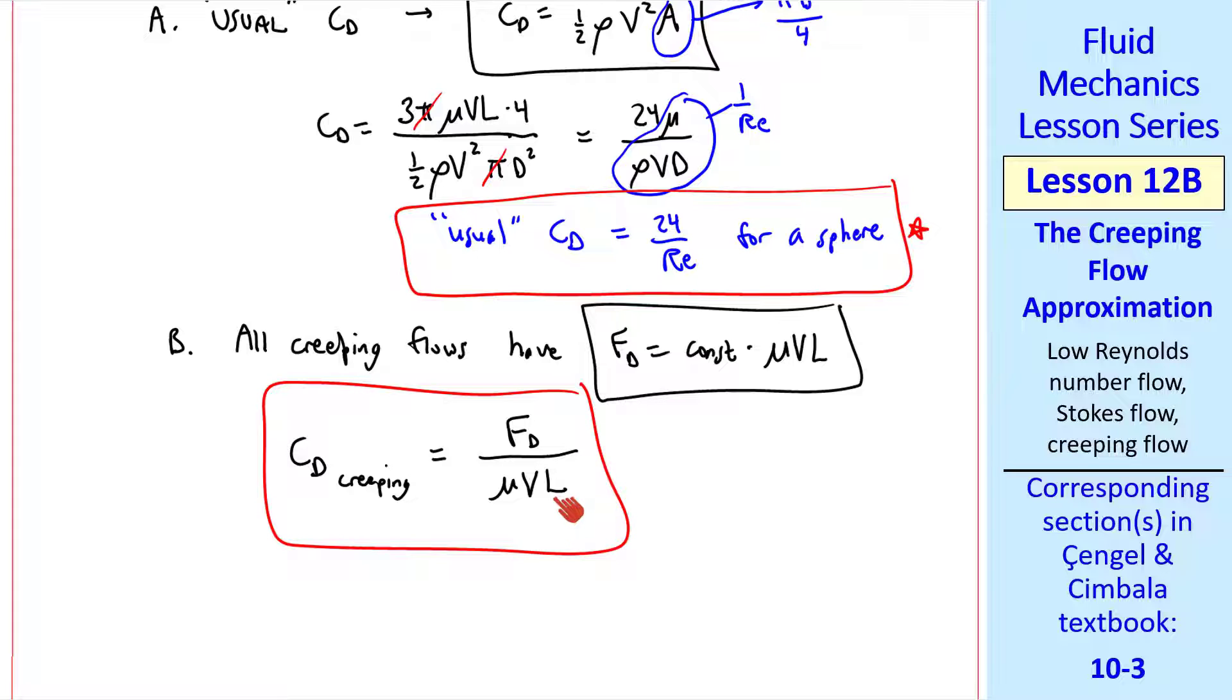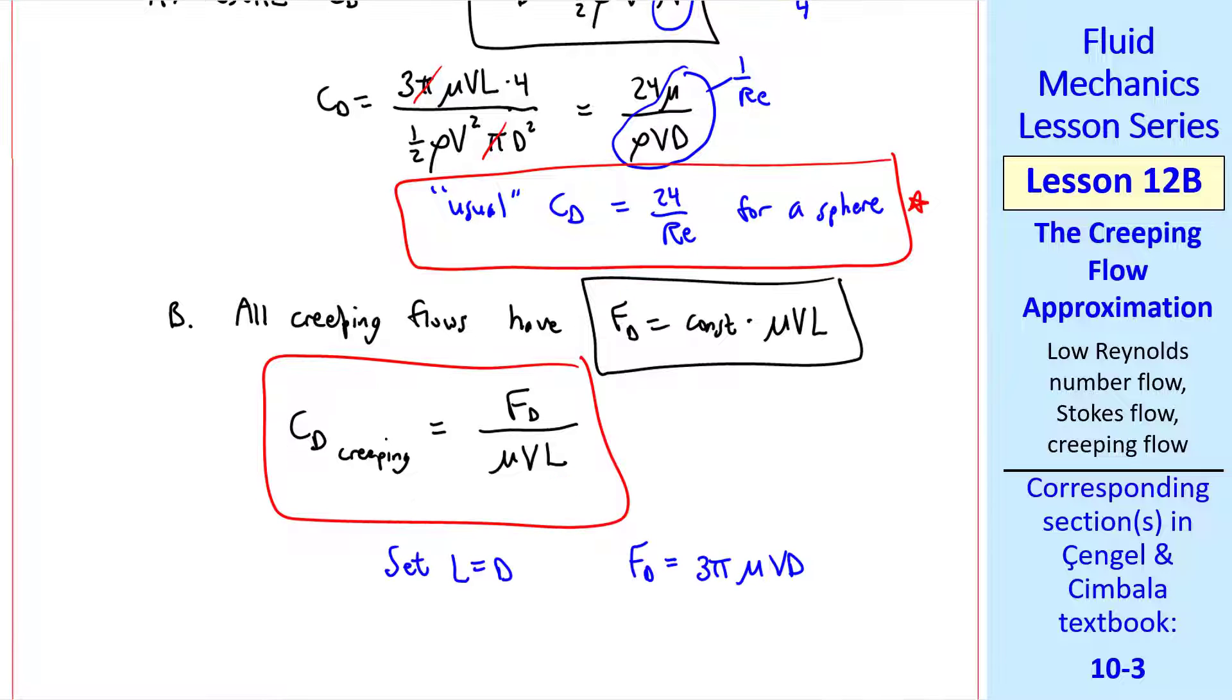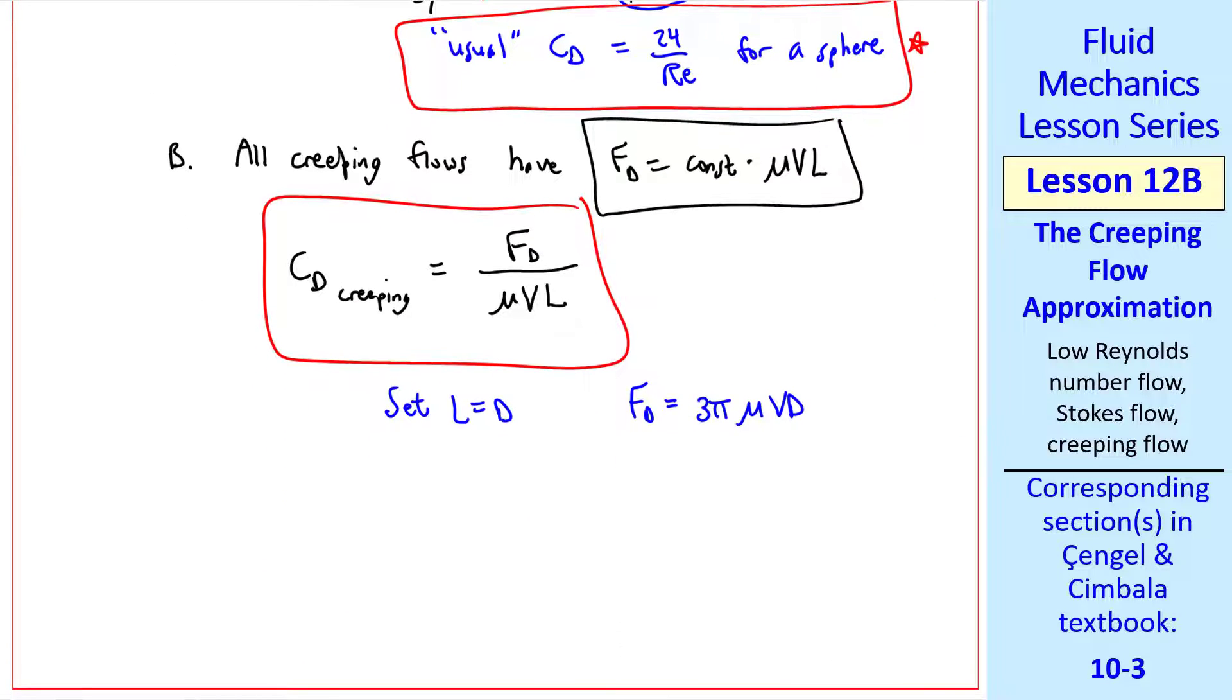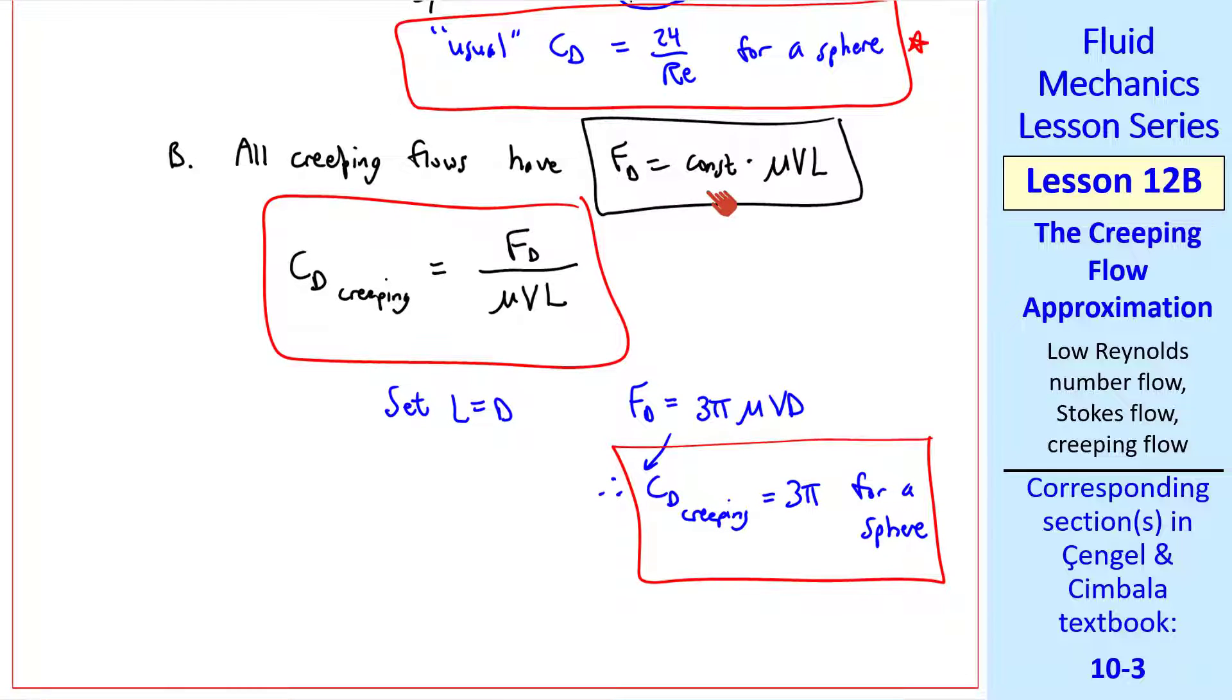L is some characteristic length scale of the problem. We would pick D, the diameter, if we're talking about a sphere. So we set L equal D, and we know from our analytical solution that FD is 3 pi mu VL. So here FD is 3 pi mu VD. So CD creeping is 3 pi for a sphere. Other objects in creeping flow would have the same equation, but a different constant. In other words, a different creeping drag coefficient.